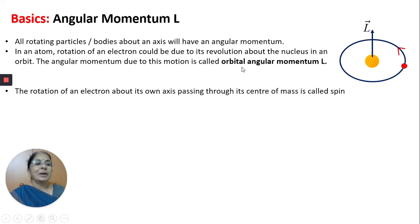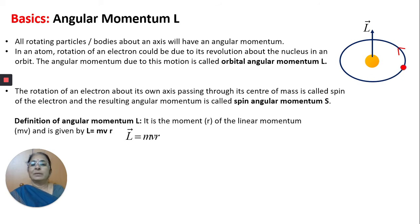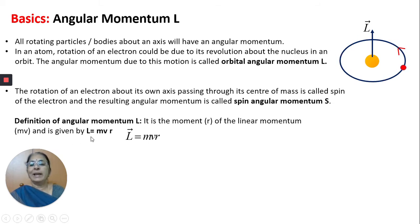This electron has revolutionary motion as well as rotation about its own axis called spin motion. The angular momentum is due to these two kinds of motion. Angular momentum can be defined as the moment of the linear momentum mv, given by L equal to mvr.